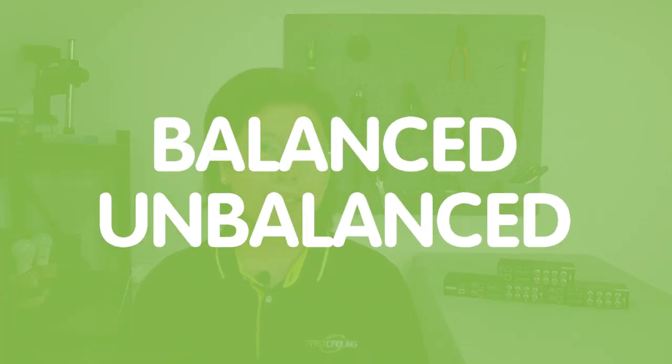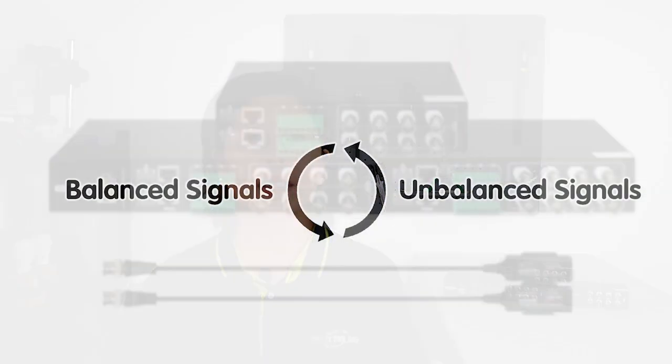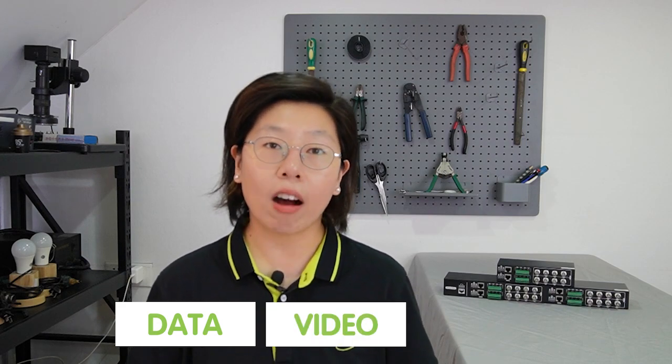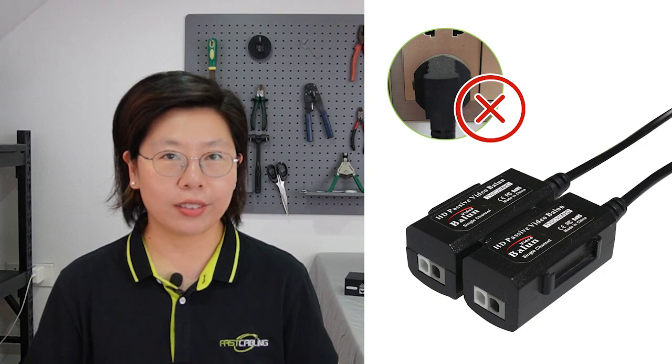Balun, on the other hand, offers the flexibility of transmitting video signal over long distances without compromising on quality. Balun is short for balanced-unbalanced. This compact gadget plays a critical role by converting between balanced and unbalanced signals, allowing for the transmission of data, video, and audio over long distances without signal degradation or loss of quality. Passive baluns do not require a power source and are simple to install, suitable for shorter cable runs and offering a cost-effective solution.